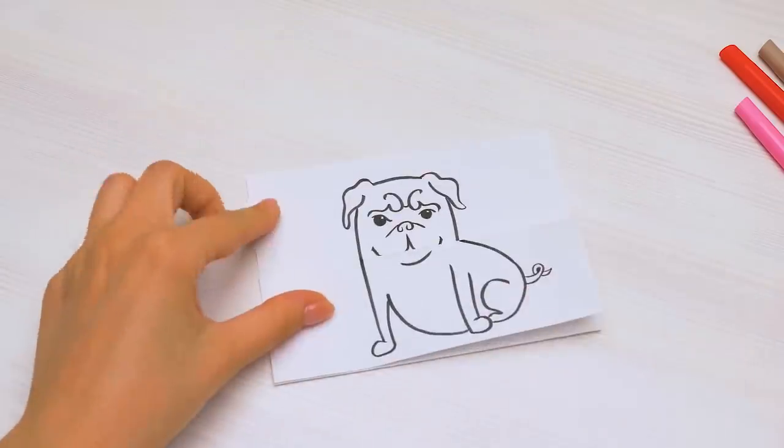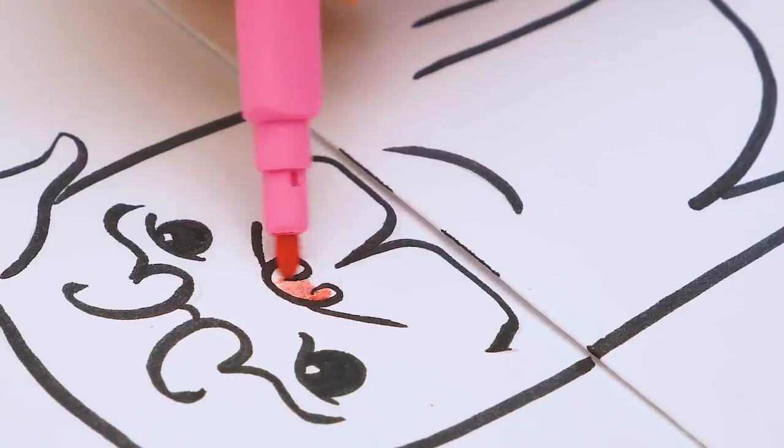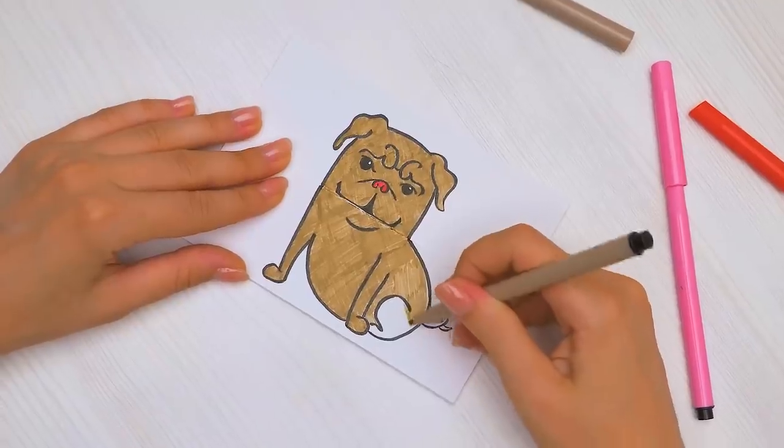First, you need to draw a picture on a folded piece of paper. I've chosen a doggie, but you can draw anyone you like.